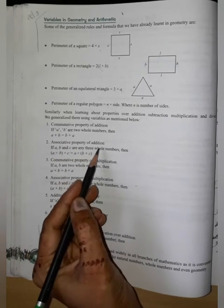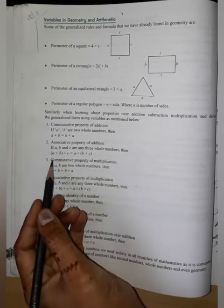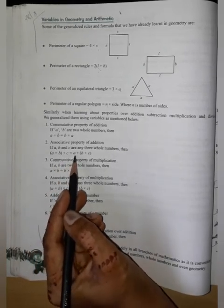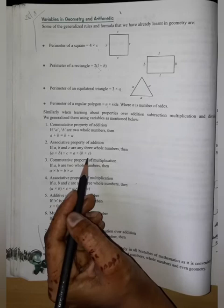Associative property of addition: bracket A plus B plus C is equal to A plus bracket B plus C.